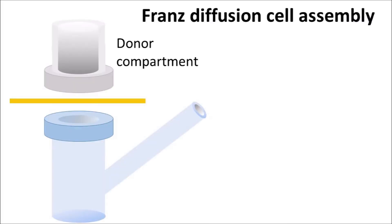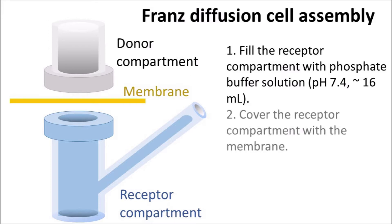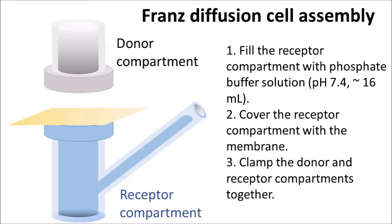That's how the FRANS cell is assembled. Basically, the donor compartment is placed on the receptor compartment and between them there's a membrane. Then we use a clamp to put the donor and receptor compartments together.